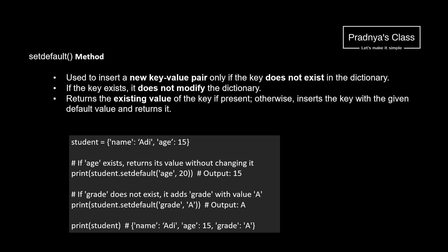Hope you are familiar with both the methods. If not, let's check out the answer — in this way you can write the answer. First you will write the working of the method followed by one example. The setDefault method inserts a new key-value pair if it doesn't exist in the dictionary. But if the key already exists, then it will do nothing.